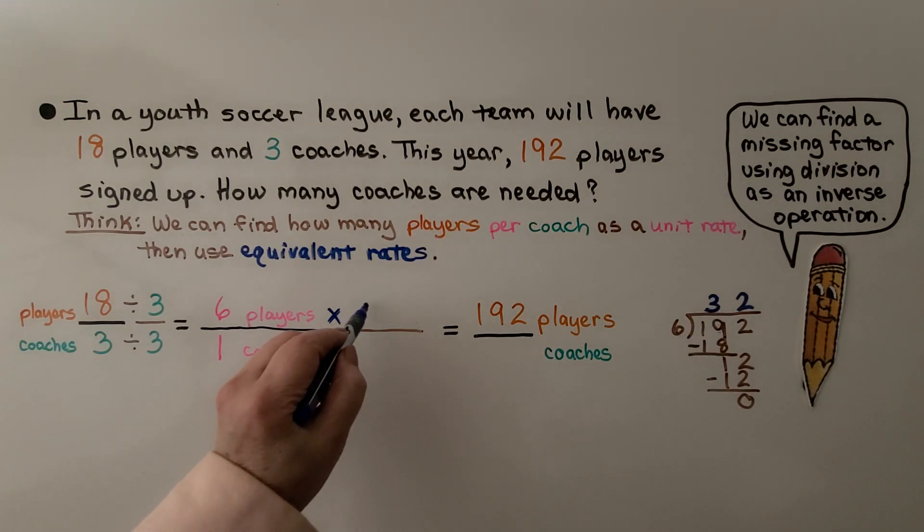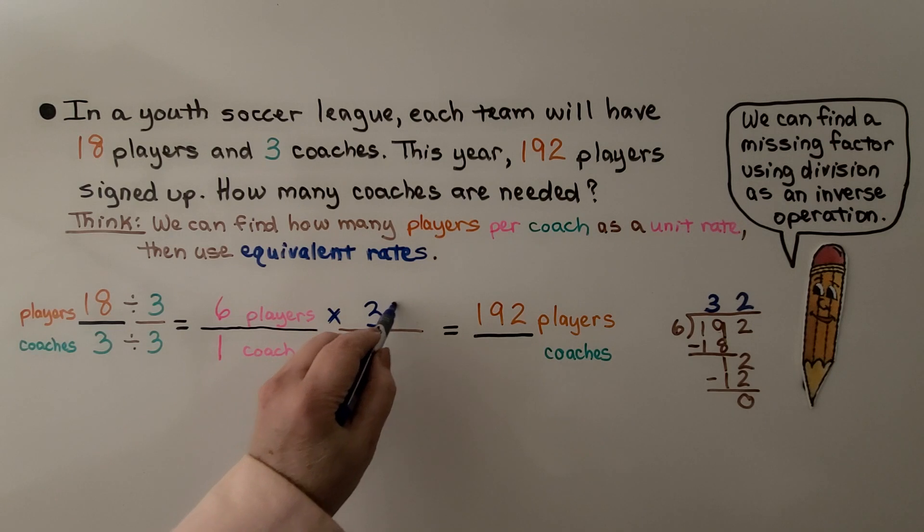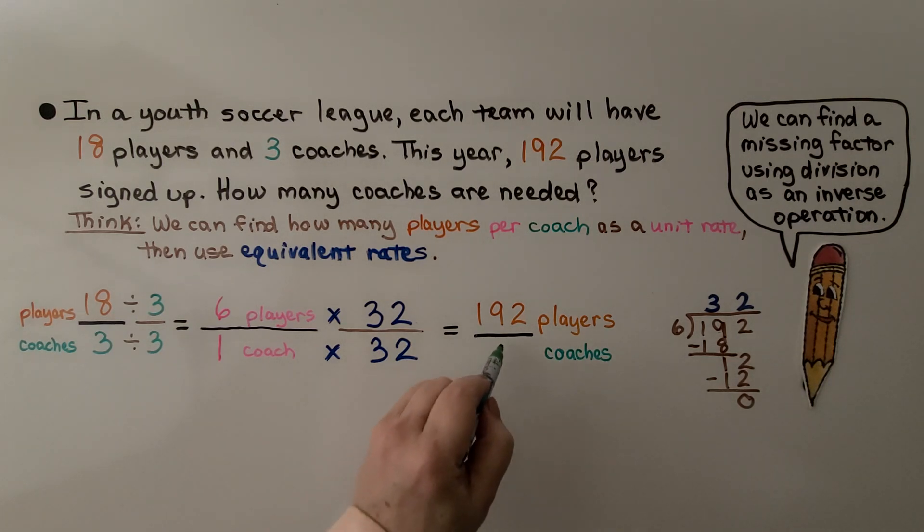This means we're going to multiply the six times 32. We're going to multiply the coaches times 32. We're going to need 32 coaches. How many coaches are needed? 32.